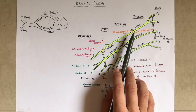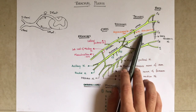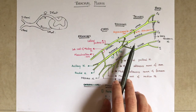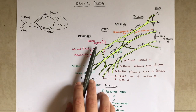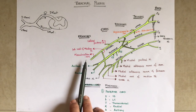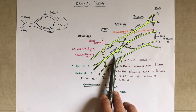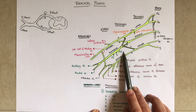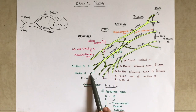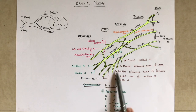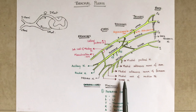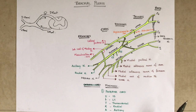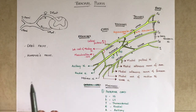From the trunk, the suprascapular nerve and the nerve to subclavius, both starting with S. From the lateral cord: lateral pectoral nerve, lateral root of median nerve, and musculocutaneous nerve. From the posterior cord: ULTRA — upper subscapular, lower subscapular, thoracodorsal, radial, and axillary nerves. From the medial cord: medial pectoral nerve, medial cutaneous nerve of arm, medial cutaneous nerve of forearm, medial root of median nerve, and ulnar nerve.